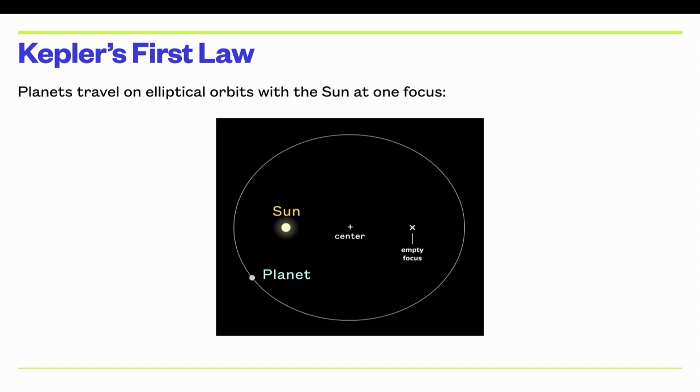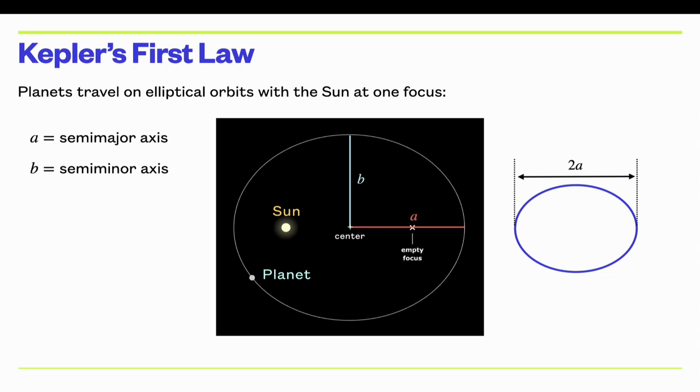So let's define a few properties of an ellipse. Let's put a plus sign at the center of the ellipse. The distance from the center out to the long edge of the ellipse is called the semi-major axis. It's usually given by the letter a. If you look at the complete diameter or distance across the ellipse, that would be 2a. The distance from the center out to the short side of the ellipse is called the semi-minor axis, b. And so the total distance across the short width of the ellipse is 2b.